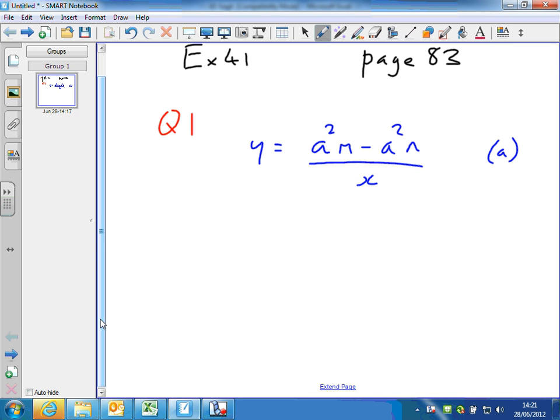So the first thing that goes into my mind when I see A appearing twice is that at some point I'm going to factorise. So I could actually factorise straight away and take the A squared outside a bracket on the right hand side.